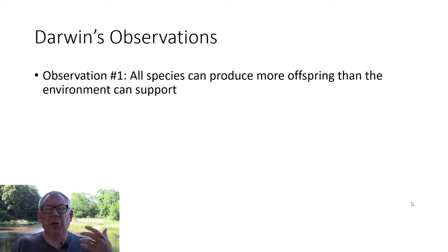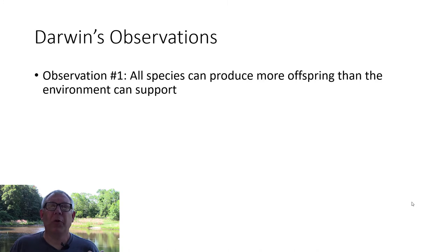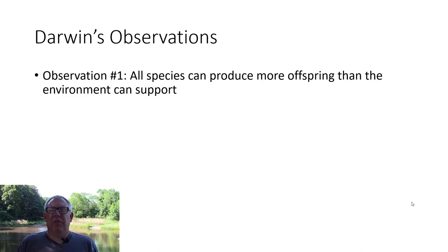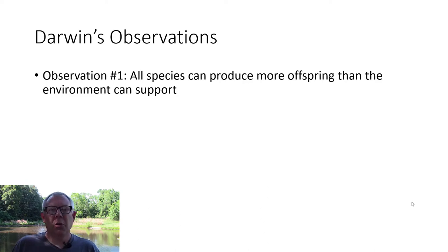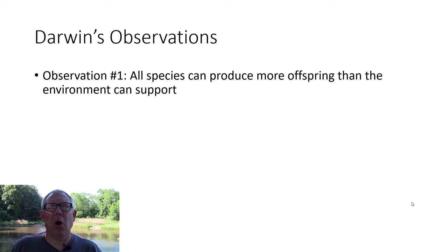Darwin made several observations and put them together to form the idea of natural selection. Ernst Mayr organized them in a logical way. The first observation: all species over-reproduce. Stop and think about that. If you're a biologist and naturalist like Darwin, looking at all kinds of organisms all over the world, you realize all species produce way more offspring than they can expect to survive.